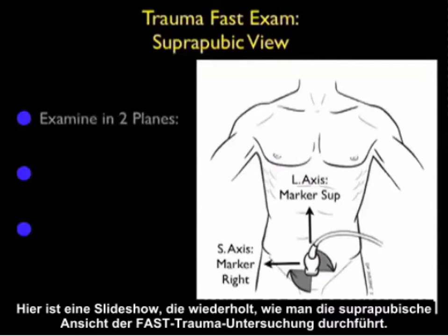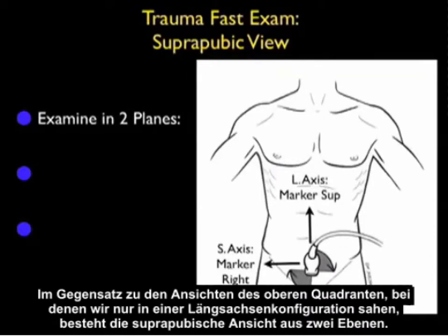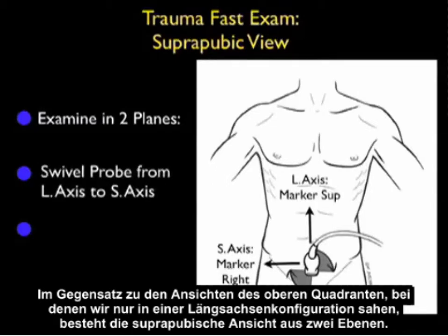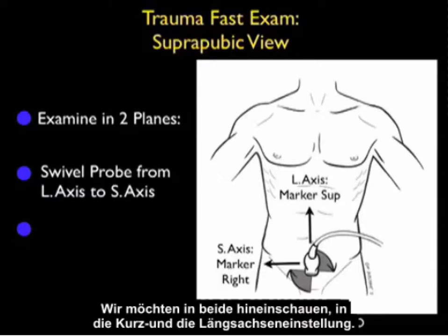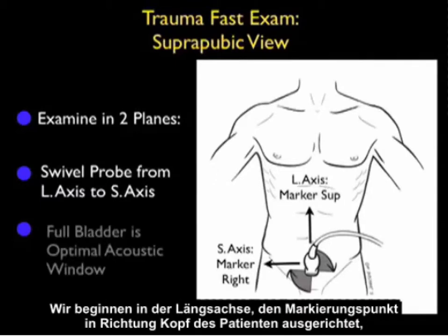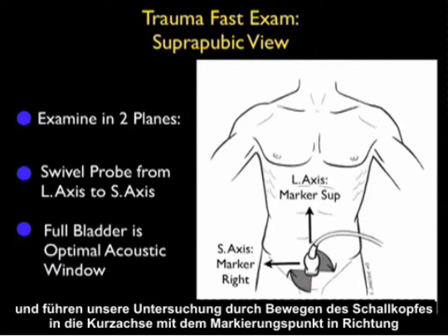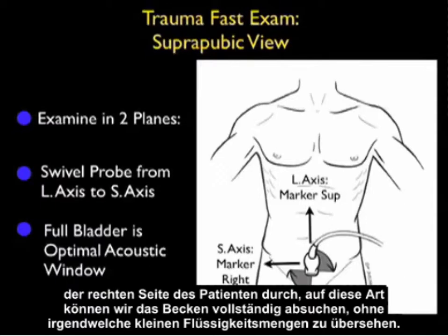Here's a slide reviewing how to perform the suprapubic view of the trauma FAST exam. In contrast to the upper quadrant views where we looked only in a long axis configuration, the suprapubic view is made up of two planes — we want to look in both long and short axis configurations. We'll begin in long axis with the marker dot oriented towards the patient's head, then move the probe into short axis with the marker dot towards the patient's right side, to fully scan through the pelvis and not miss any small amounts of fluid.